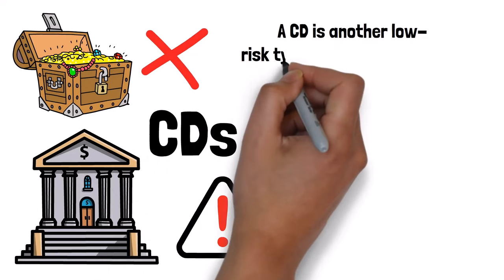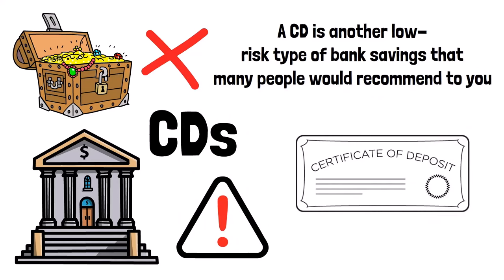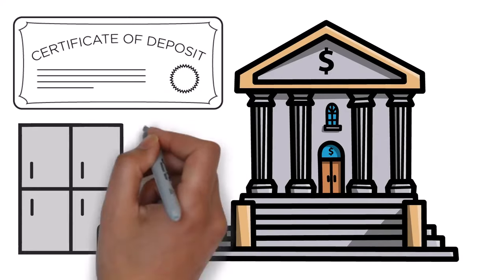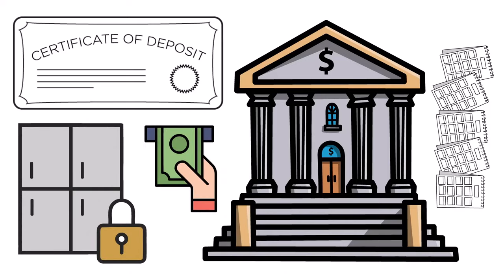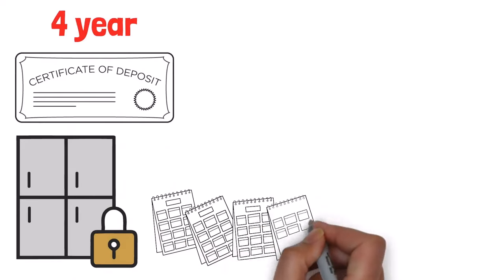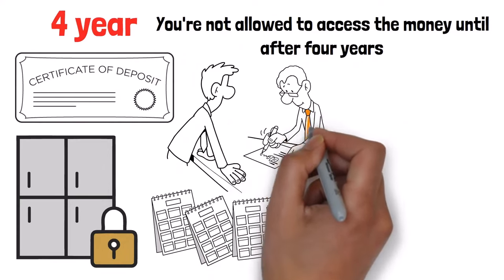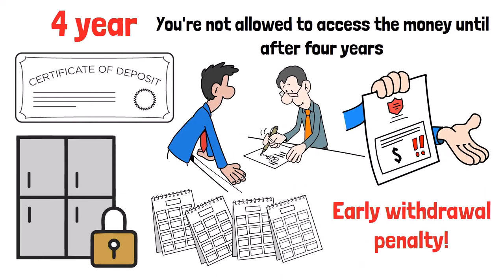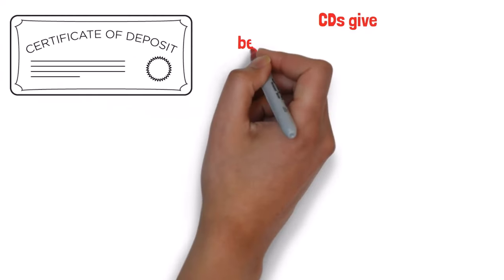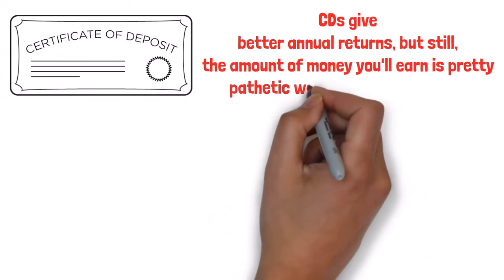Even CDs are not a good investment vehicle for you. You see, a CD is another low-risk type of bank savings that many people would recommend to you. CD stands for Certificate of Deposit. The way it works is that you put your money in a bank account and the money is locked, so you can't withdraw for a certain period of time. For example, a four-year CD would keep your money locked for four years, and you're not allowed to access the money until after four years. If you insist on withdrawing before the set date, you'll be charged a fee called an early withdrawal penalty.